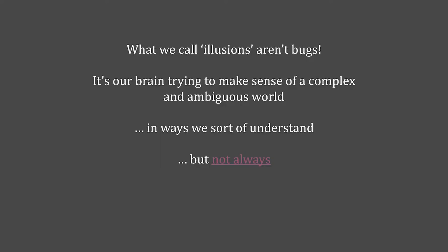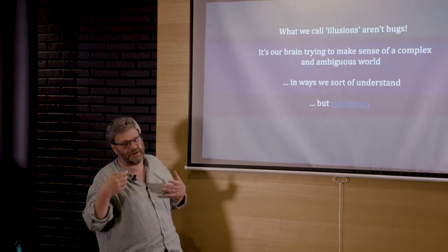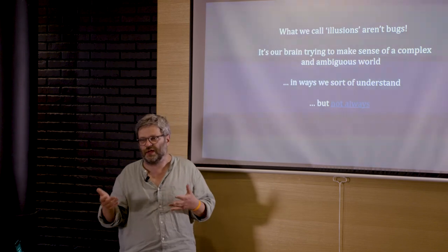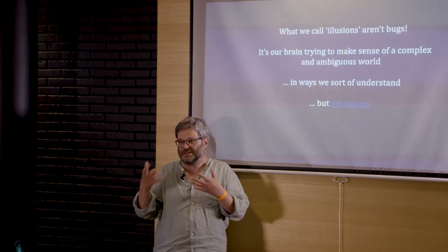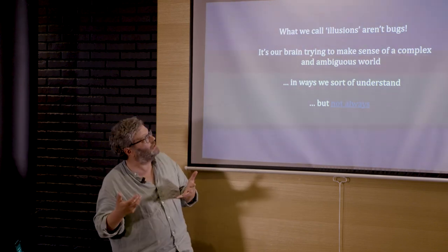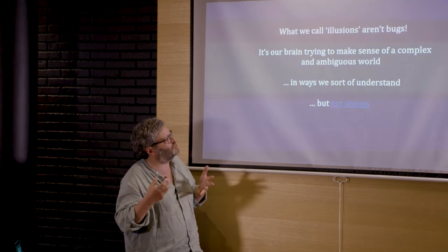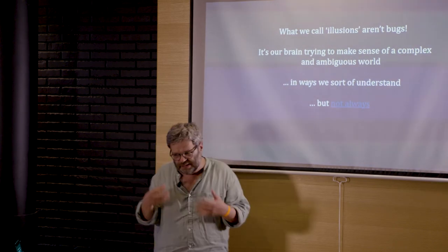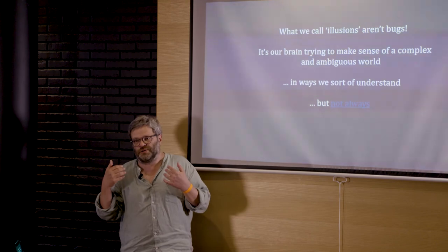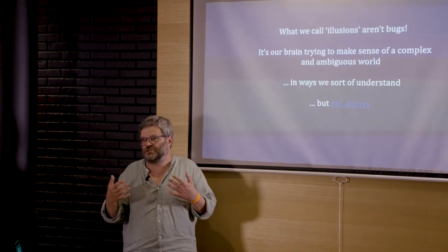Generally, what we call illusions or the kind of illusions that are sort of seen in the popular literature, the ones that I've just shown you now, aren't really bugs. Sometimes they're presented as bugs or something that's not working or mistakes or something like that. They aren't. It's actually our brain trying to make sense of a complex world, trying to apply actually fairly high performance algorithms to this ambiguous data, trying to, doing its best to extract information about what we're seeing.